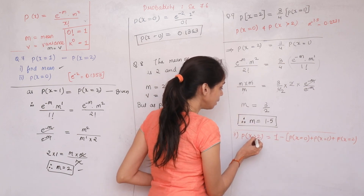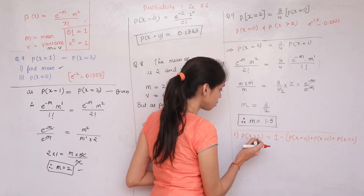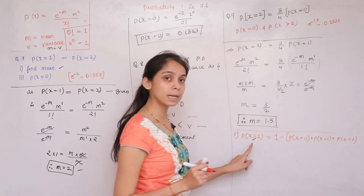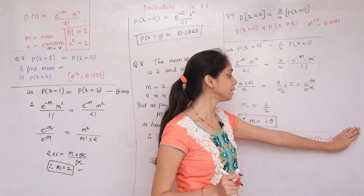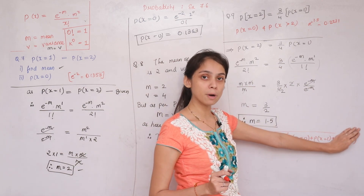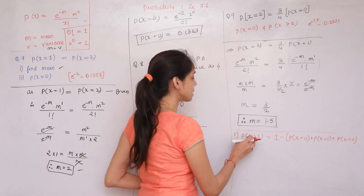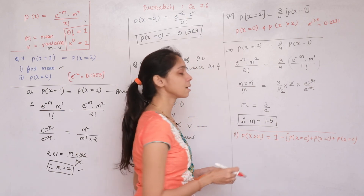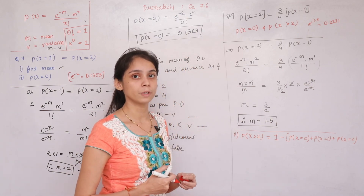The remaining calculations for question 9 — finding P(X=0) and P(X>2) with m=1.5 — are to be completed by the student following the same approach as in previous questions.